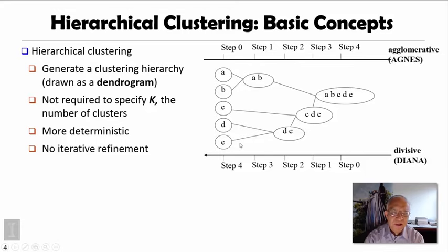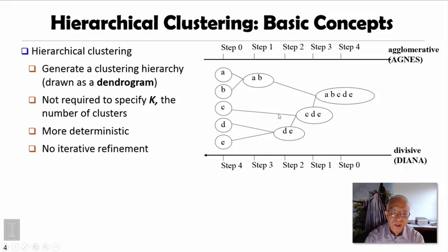So, what is hierarchical clustering? Hierarchical clustering means we can start from either single-term clusters and iteratively merge them into higher-level clusters, or we can start from one big macro cluster and iteratively split the bigger cluster into smaller ones. In this way, we generate a clustering hierarchy, drawn as a dendrogram. There is no requirement to specify k, the number of clusters, and it is more deterministic — there is no iterative refinement process.